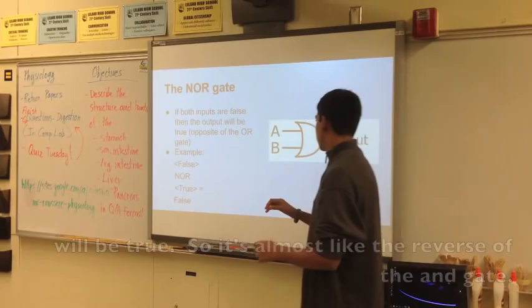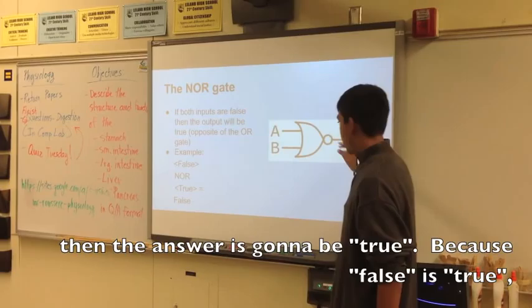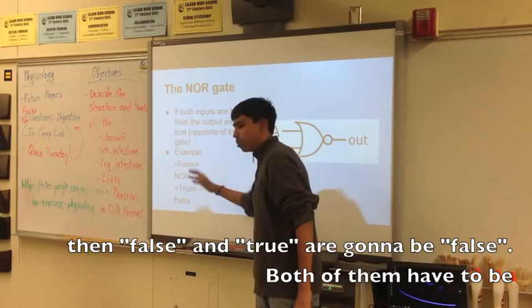The NAND gate: if either of the inputs are false, the output will be true. It's the exact opposite of the AND gate — hence the name NAND gate. See how there's one false input there? Then that answer is going to become true.